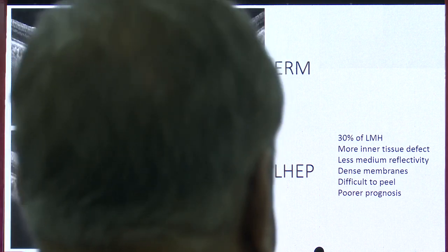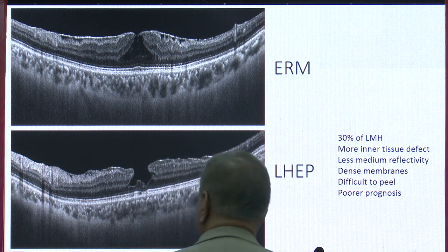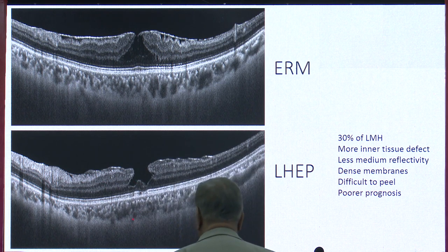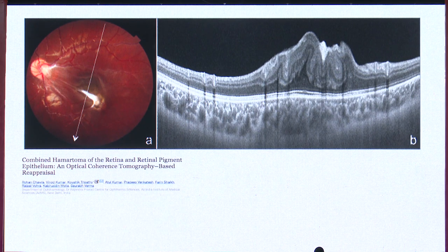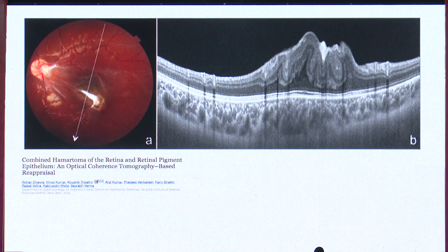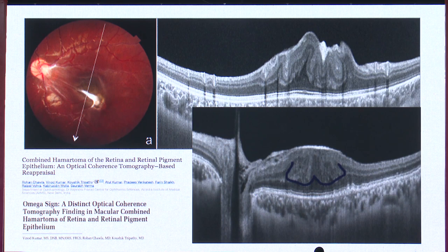LHEP is important because these patients have more of that yellowish tissue, so there can be a tear when you try to peel it. It is difficult to peel, with high chances of macular hole formation, and the overall prognosis of lamellar hole associated with epiretinal proliferation is poorer than those without it. Another differential of ERM in a young child is combined hamartoma of the retina and retinal pigment epithelium, which shows thickening of the inner retinal layers, peaking of the middle layers bounded by the outer plexiform layer. Most cases do not have RPE involvement. A typical omega sign has also been described for this entity.